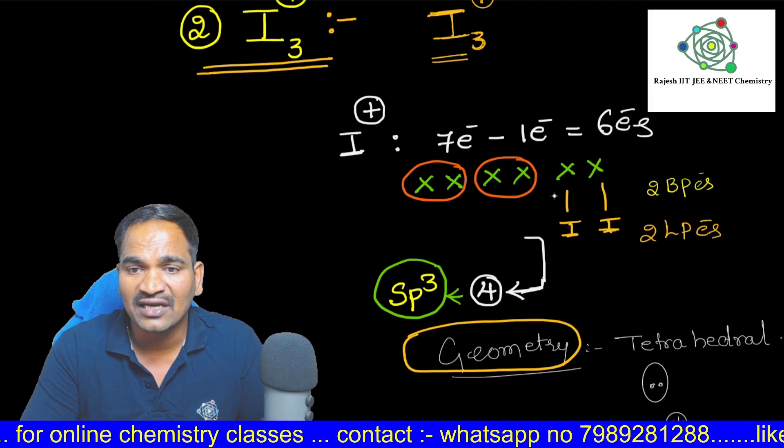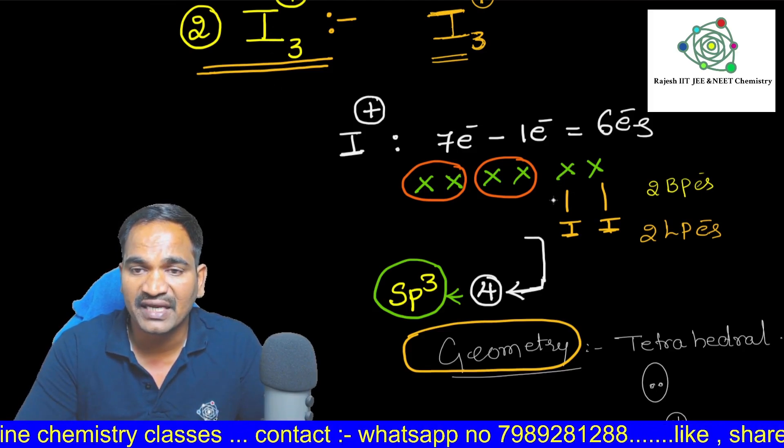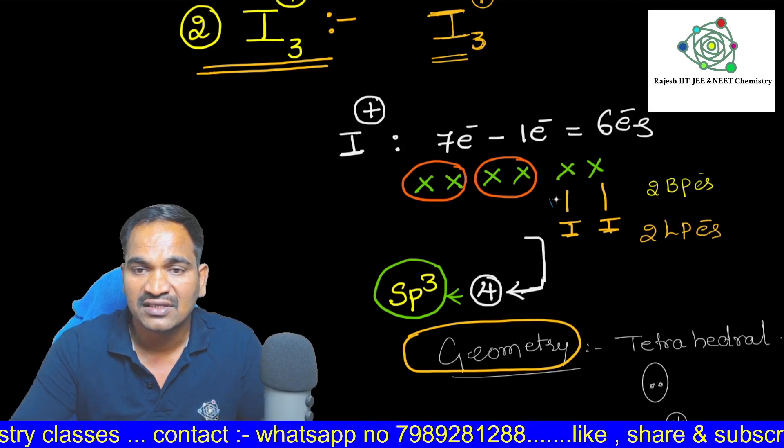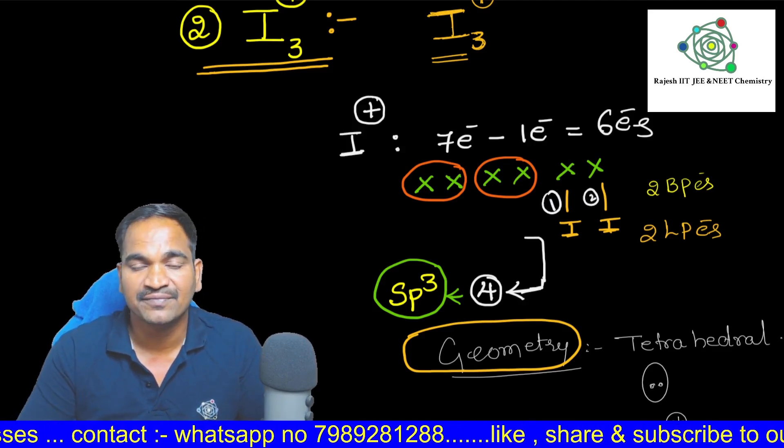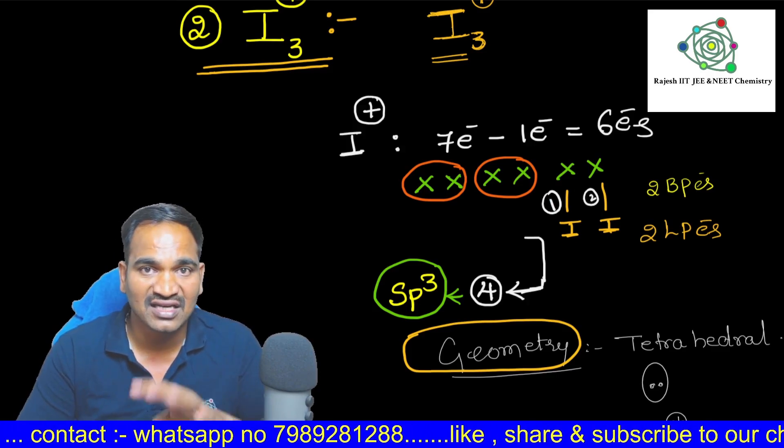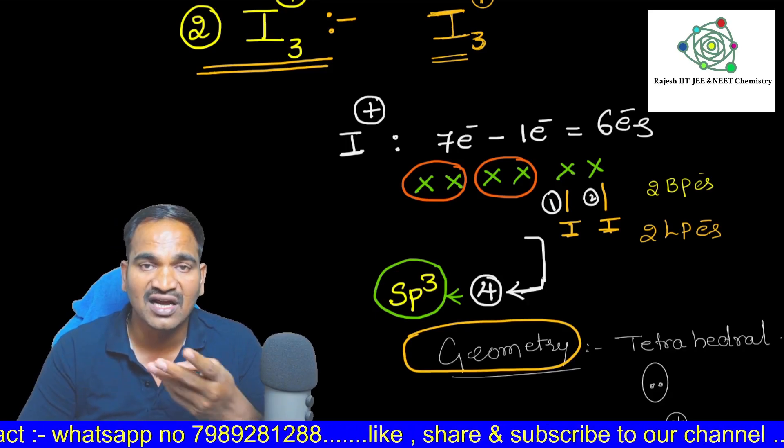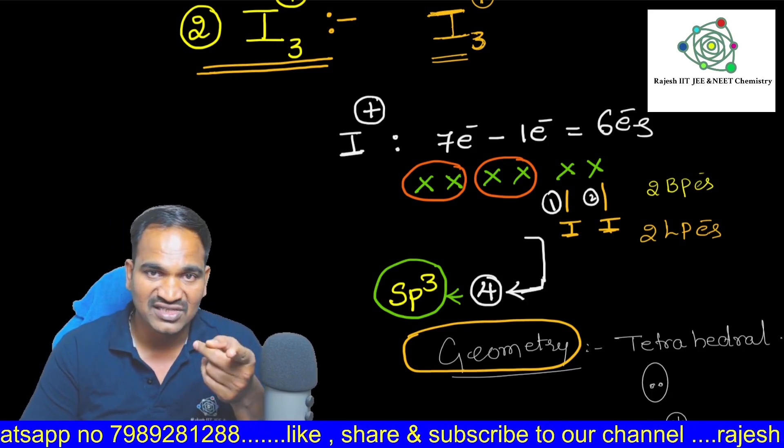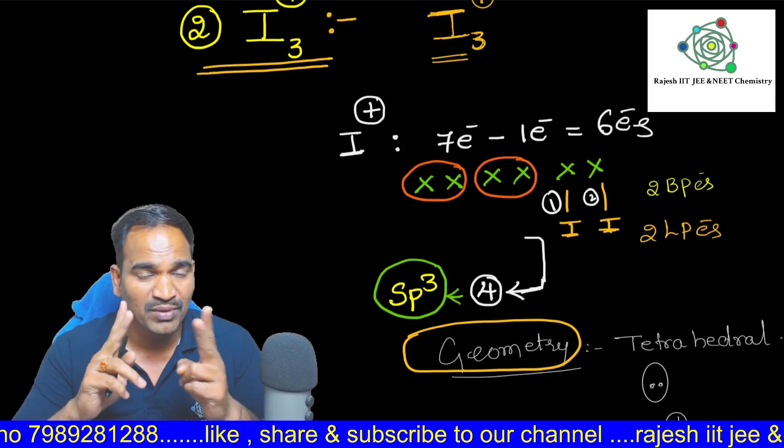So 2 electrons are forming a bond. 2 electrons are forming a bond with 2 iodines. This is 1 bond pair. This is 1 bond pair and this is second bond pair. Remaining how many electrons are there? 4 are there on the central atom. Those 4 electrons are nothing but 2 lone pairs. So 2 lone pairs on the central atom, 2 bond pairs on the central iodine. Total 2 plus 2, 4.